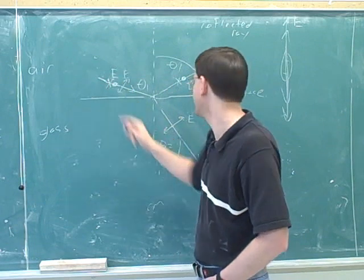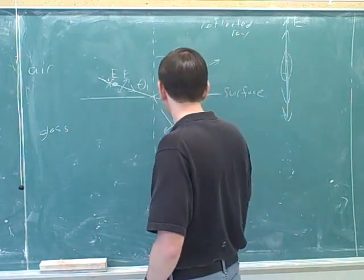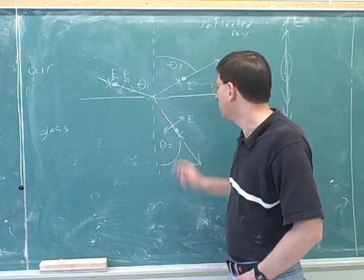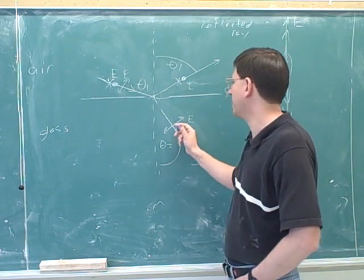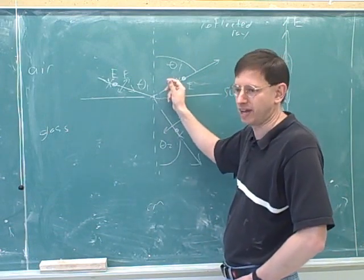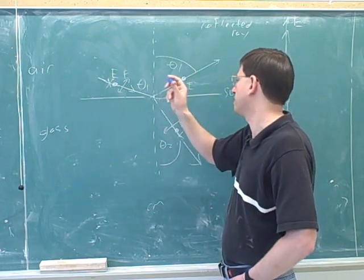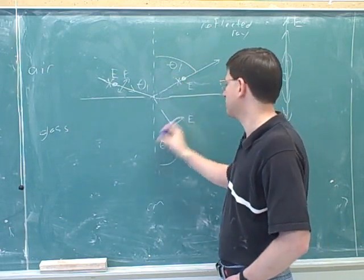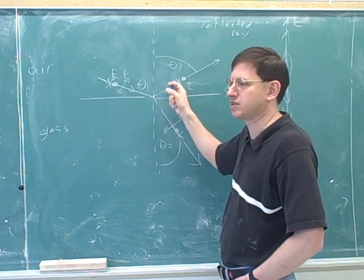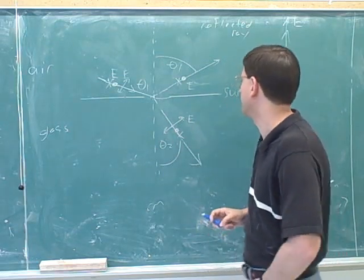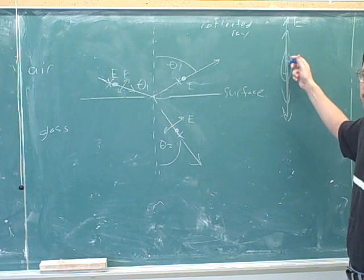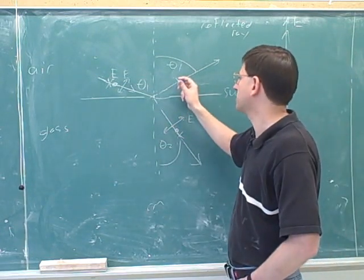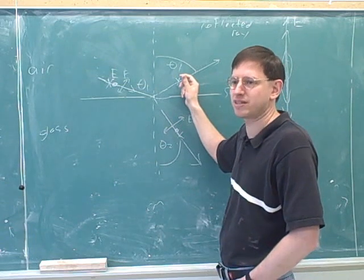Originally we had unpolarized light. The transmitted light down here can still be oscillating in both directions. However, only the oscillations into and out of the board can generate the reflected ray, because the reflected ray is perpendicular to those oscillations. The in-plane oscillation cannot generate the reflected ray because it would be parallel to it — rays are not generated parallel to the oscillation of the electric field. So the light along the reflected ray is now polarized.